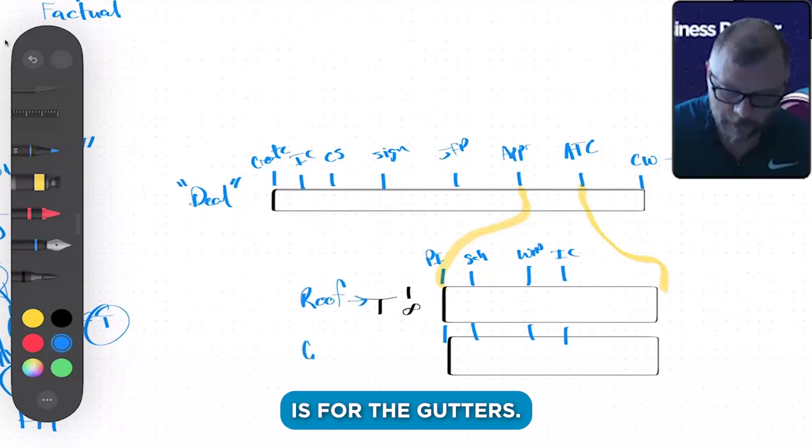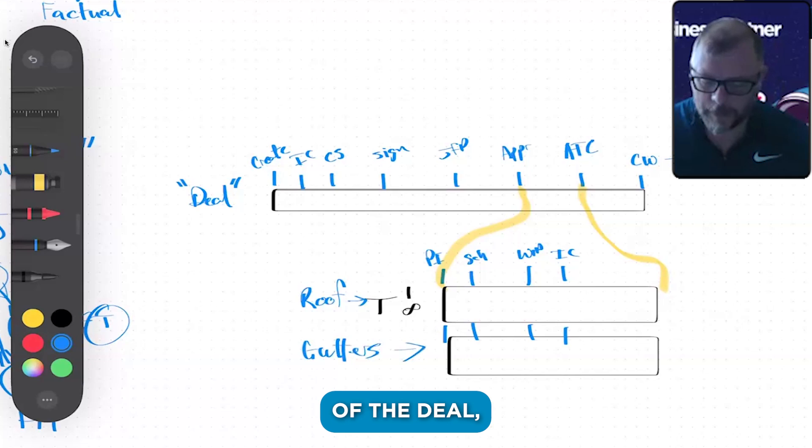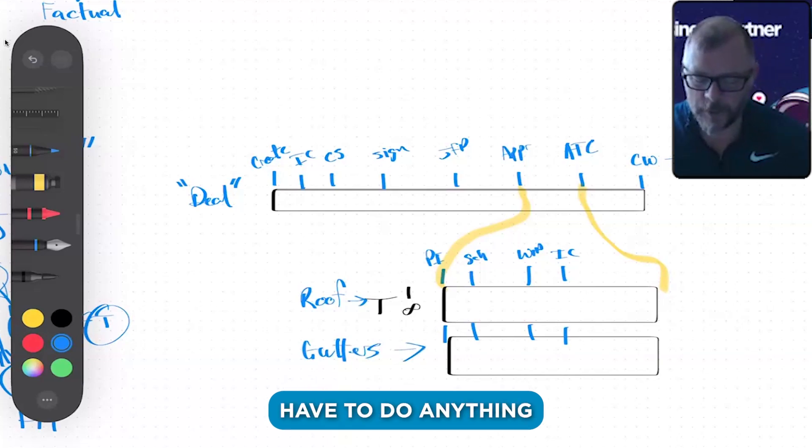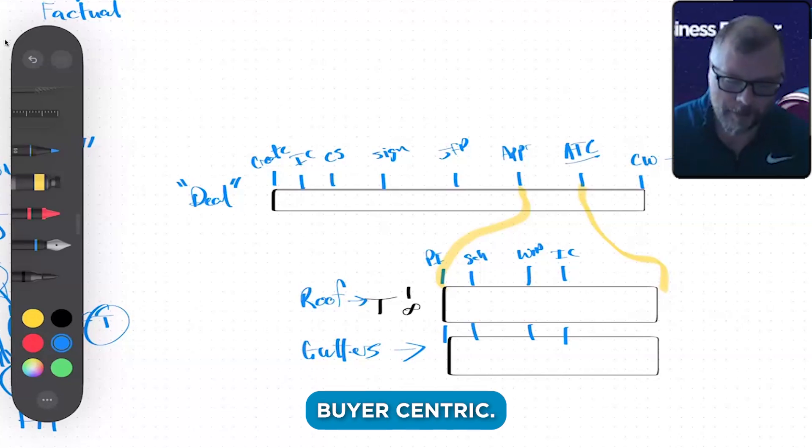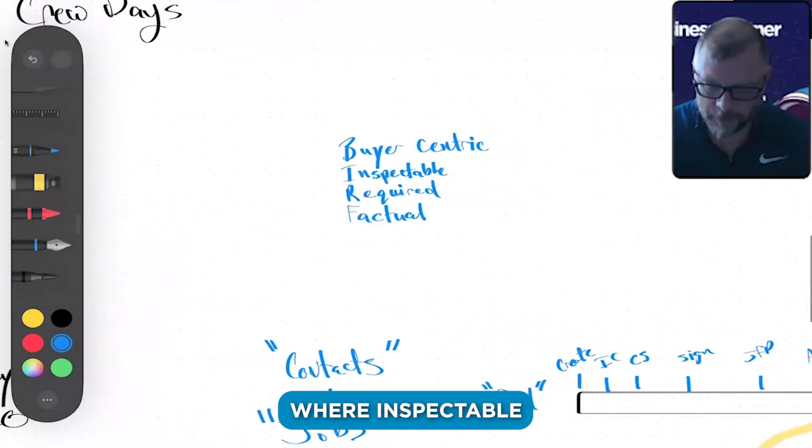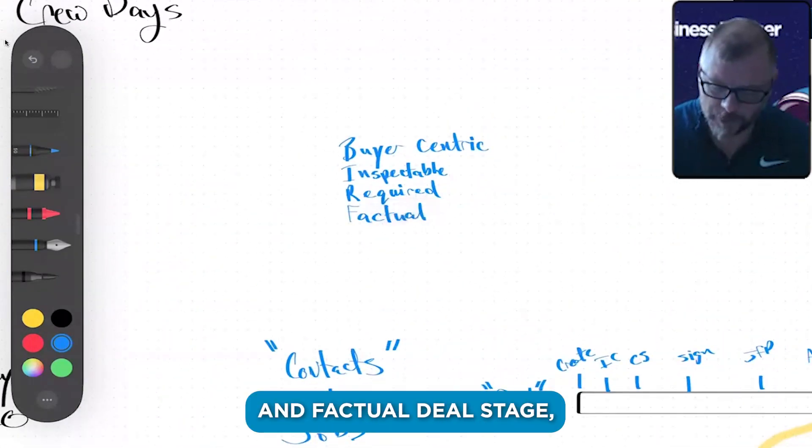In the context of the deal, we really don't have to do anything or shouldn't do anything until all trades are complete. That's the next buyer-centric, inspectable, required, and factual deal stage. A required stage is that all trades have to be complete.